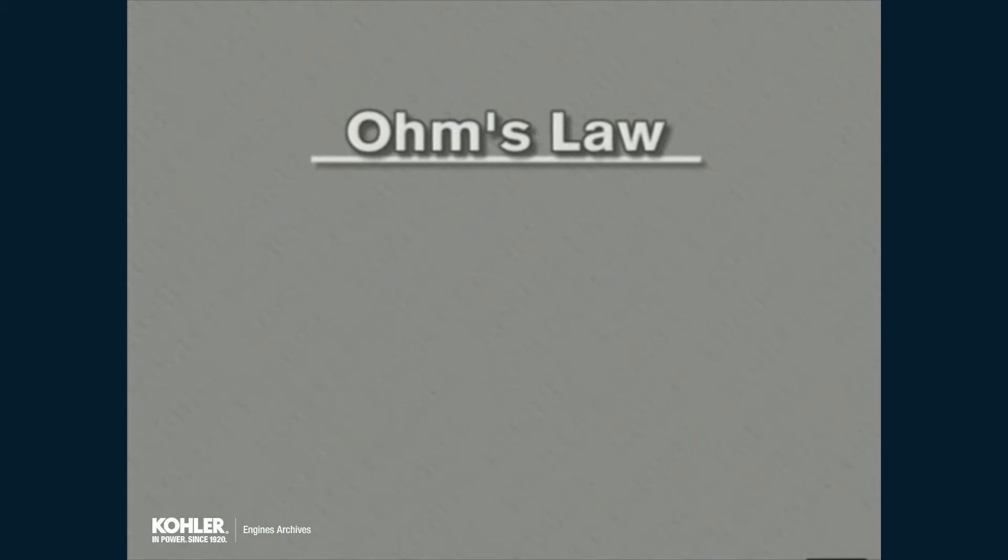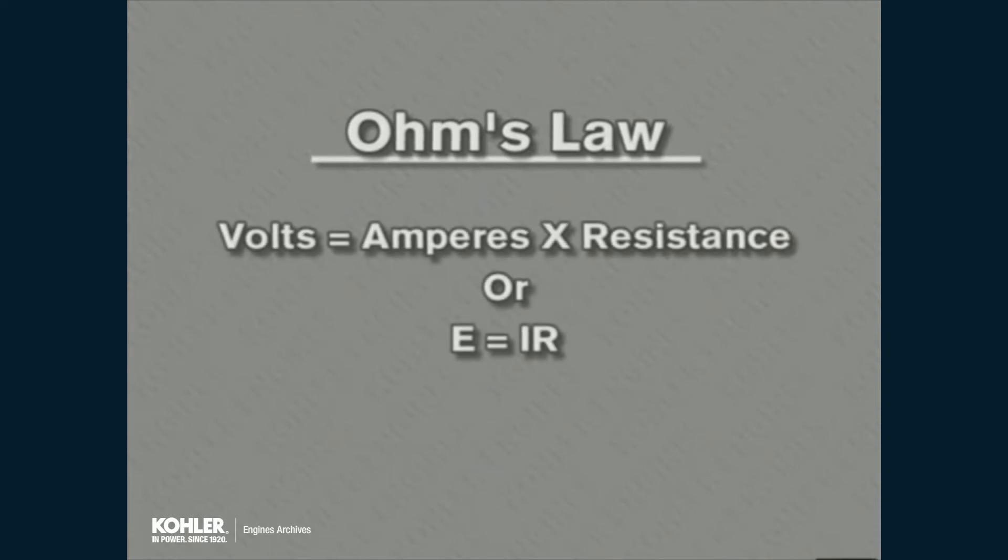The relationship was originally expressed in Ohm's law, but it can be best illustrated with the mathematical formula volts equals amperes times resistance, or E equals I times R. If any two of the values are known, the third can always be calculated.